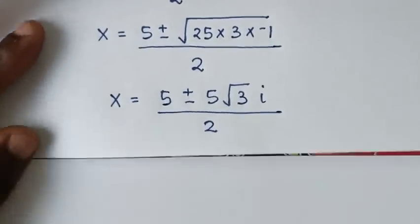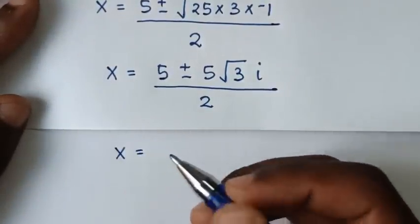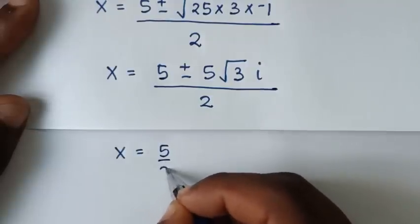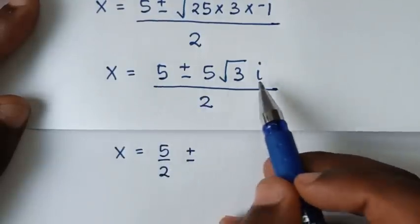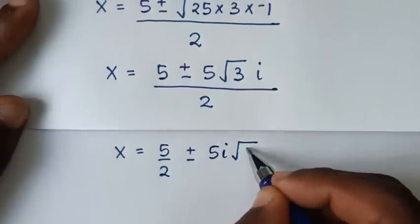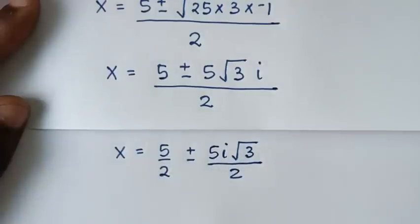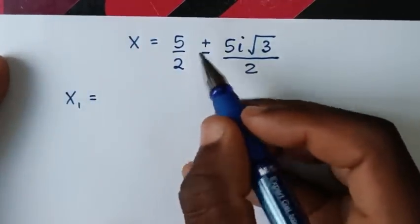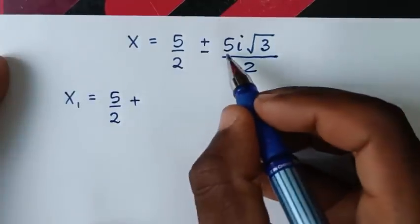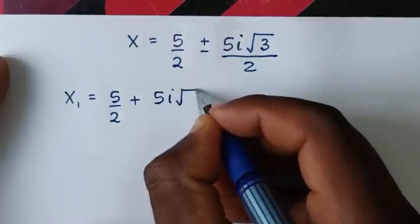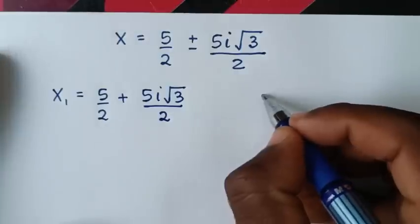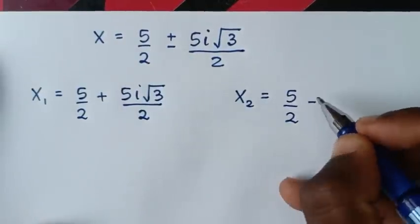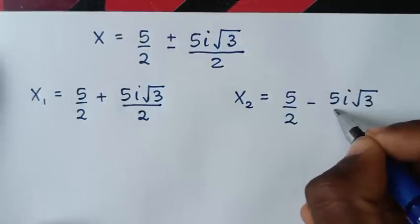Dividing through by 2: x is equal to 5 over 2 plus or minus 5i square root of 3 over 2. So we have two solutions: x1 is equal to 5 over 2 plus 5i square root of 3 over 2, and x2 is equal to 5 over 2 minus 5i square root of 3 over 2.